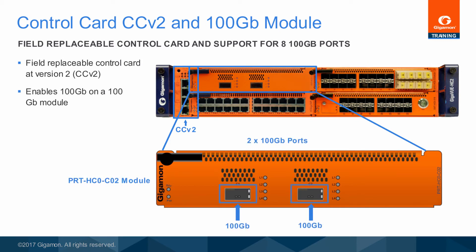The PRT-HC0-C02 module provides two 100 gigabit QSFP28 ports, supporting 100 gigabit monitoring and aggregation. The 100 gigabit ports on this module can be used as network or tool ports. This module is installed in the front module bays of the Gigaview HC2, and can only be used on a node equipped with the CCV2 control card. The maximum number of 100 gigabit modules is 4, allowing the HC2 support for up to 8 100 gigabit ports. The ports on this module can be used as either network or inline tool ports, supporting 100 gigabit logical bypass. For more information regarding the control card upgrade from CCV1 to CCV2, refer to the Gigaview HC Series hardware installation guide.